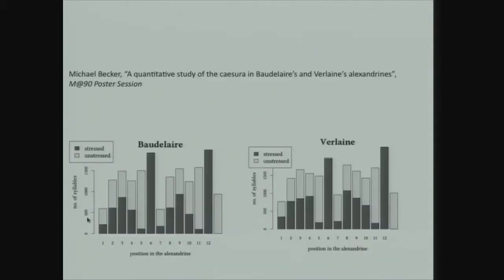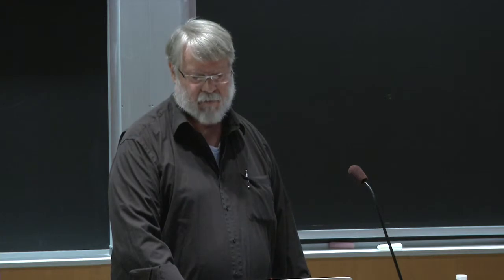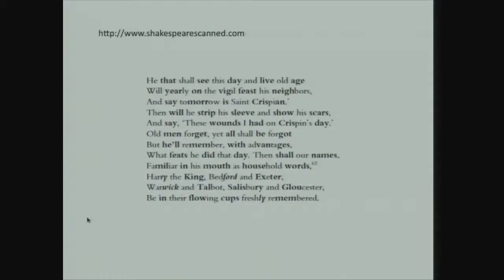In the current workshop — this is taken from the abstract of one of the poster papers — there's a quantitative study of the caesura in Baudelaire and Verlaine's Alexandrine. This is the front page from Richard Reed's Shakespeare Scanned — the plays in iambic pentameter. He has all of the plays and quite a bit of Chaucer and some other material, and this is sort of what it looks like.